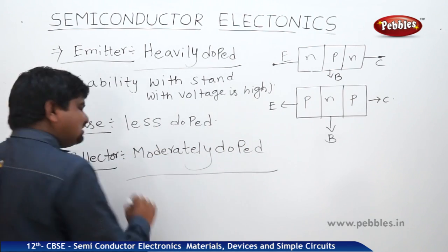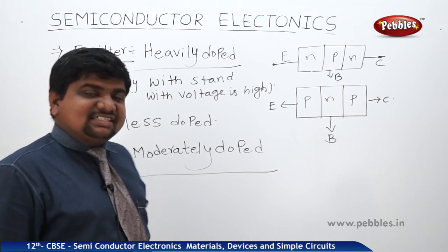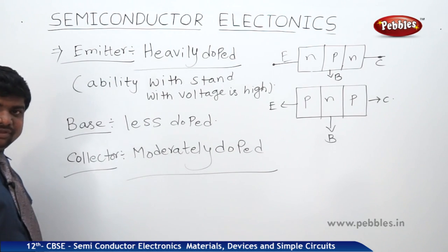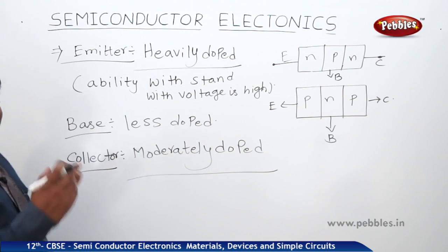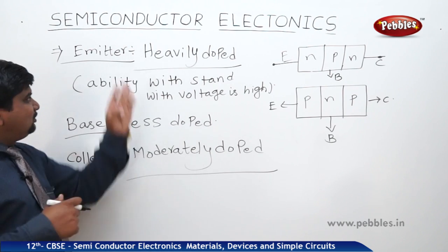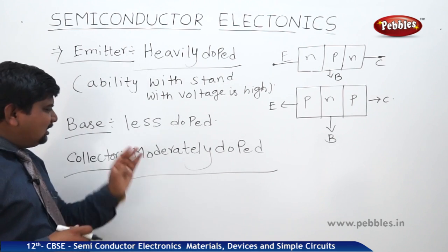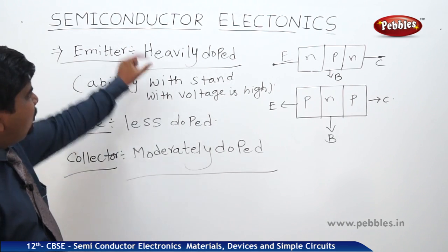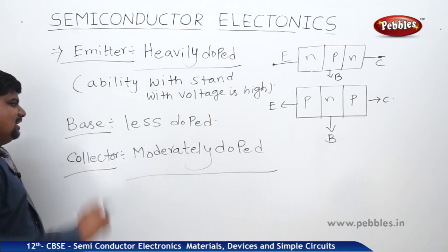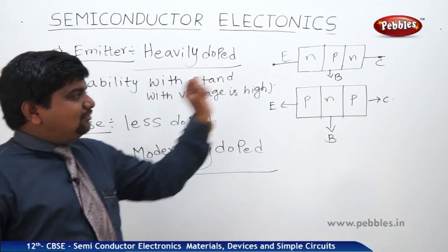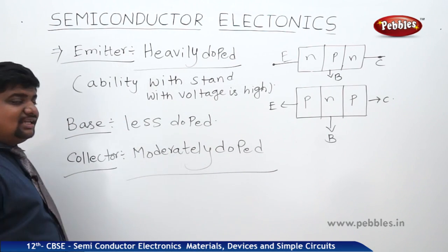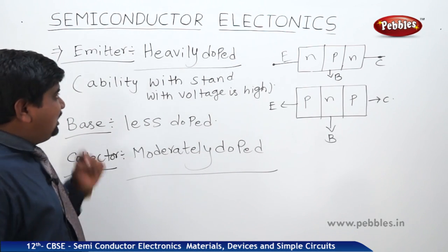If you look at a real transistor in a physics lab, the physical sizes also reflect this: the emitter is the longest, the base is the shortest, and the collector is moderate in size — between the emitter and the base. So the emitter acts as input, the base as the functioning device, and the collector as the output.